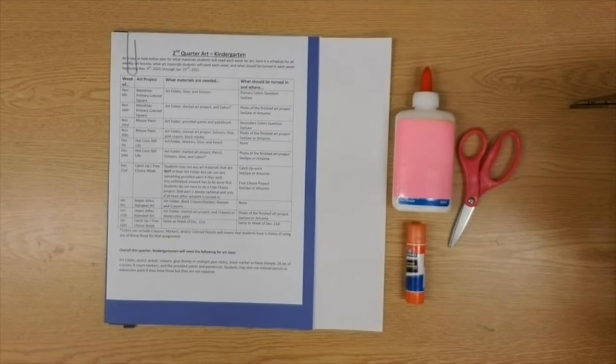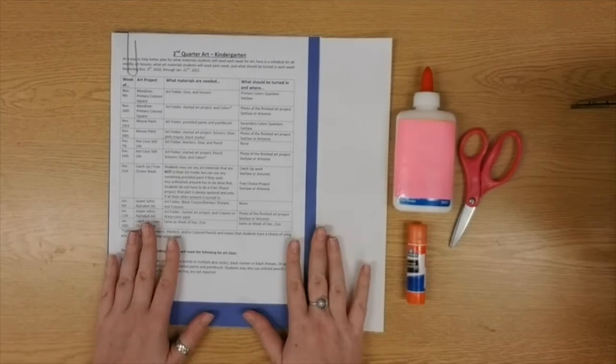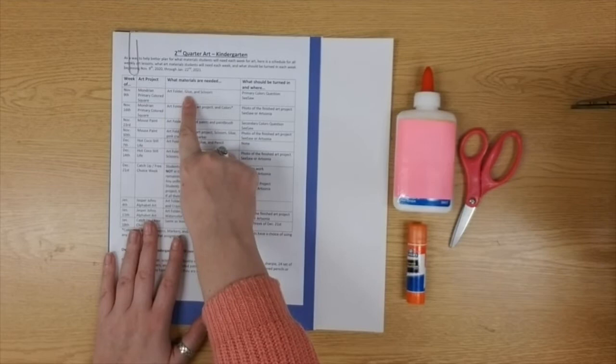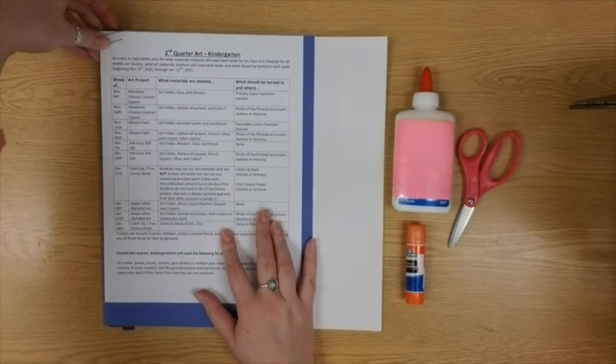So now that we've taken a peek at Mr. Mondrian and two of his paintings, it's time to get our art supplies out. As always we need our art folder, and like I said you could even look at that list to find what art materials you need. I need my art folder, I need glue and scissors. You can use glue bottle or glue stick, whatever is easiest for you.